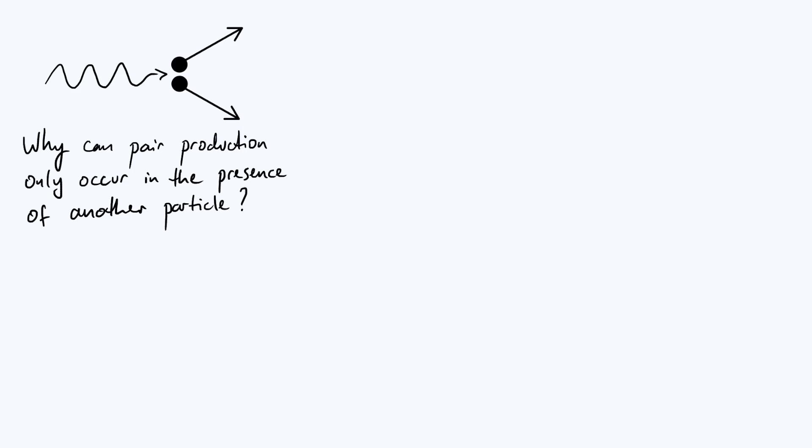Now one of the interesting things about pair production is that it can't actually happen in exactly the way that I've sketched out in my diagram up at the top here. In particular, there's a missing particle and it turns out that you need some other particle nearby in order for this process to be allowed to happen. So in this video we are going to explore why this extra particle is actually necessary.